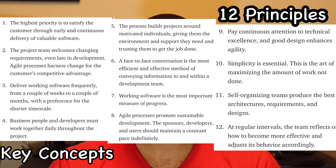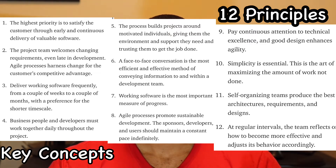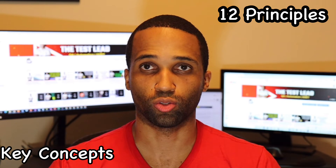Nine: pay continuous attention to technical excellence and good design, as it enhances agility. Ten: simplicity is essential — this is the art of maximizing the amount of work done. Eleven: self-organizing teams produce the best architects, requirements, and designs. Twelve: at regular intervals, the team reflects on how to become more effective and adjusts its behavior accordingly. This is what they call retros.